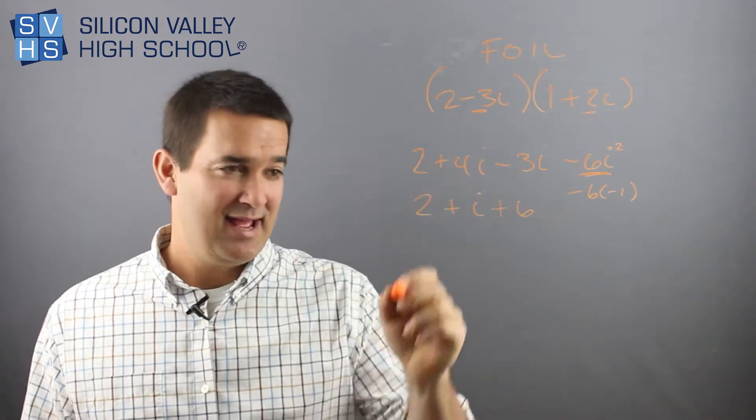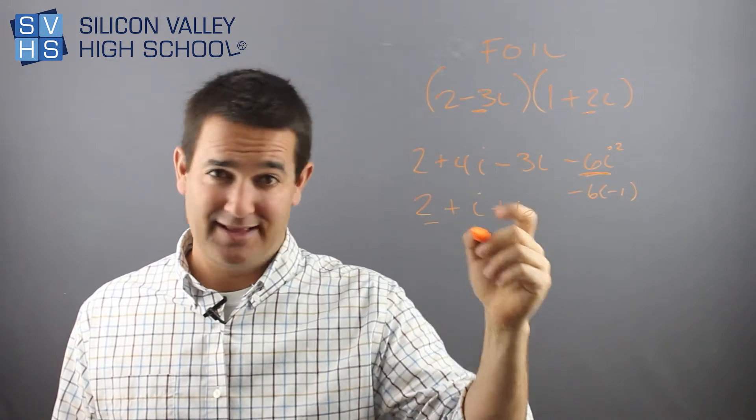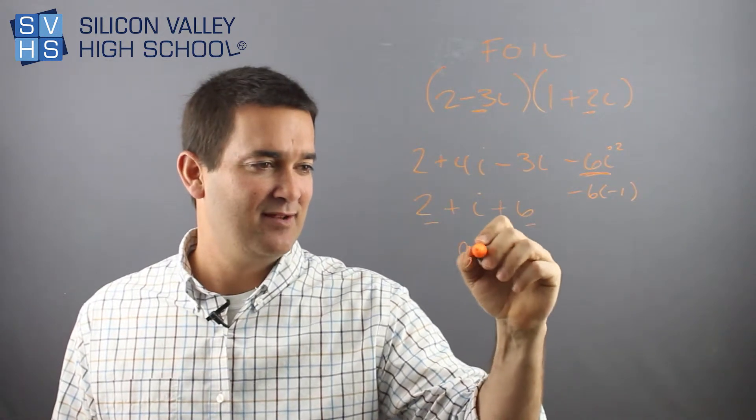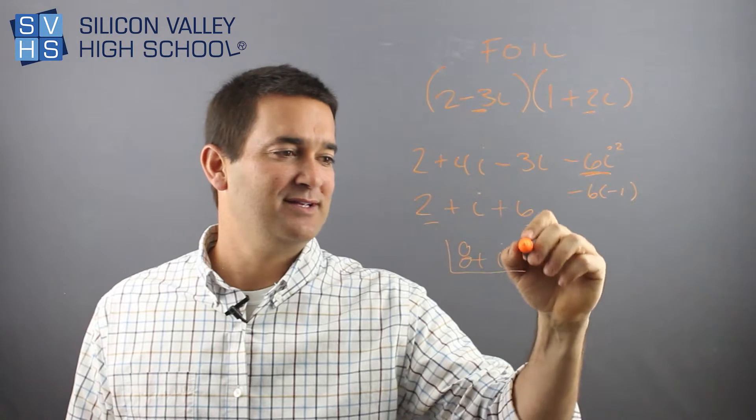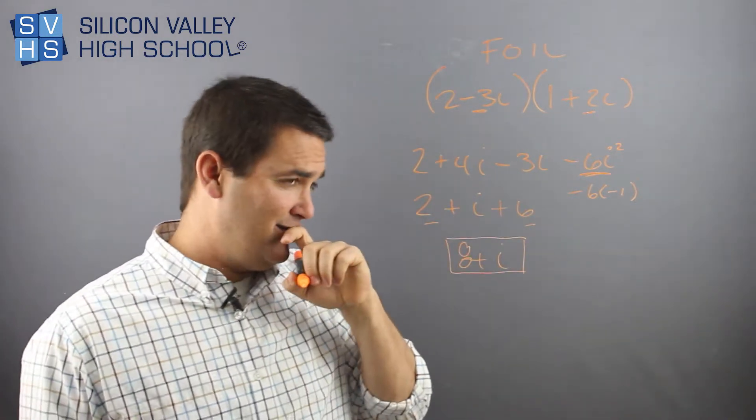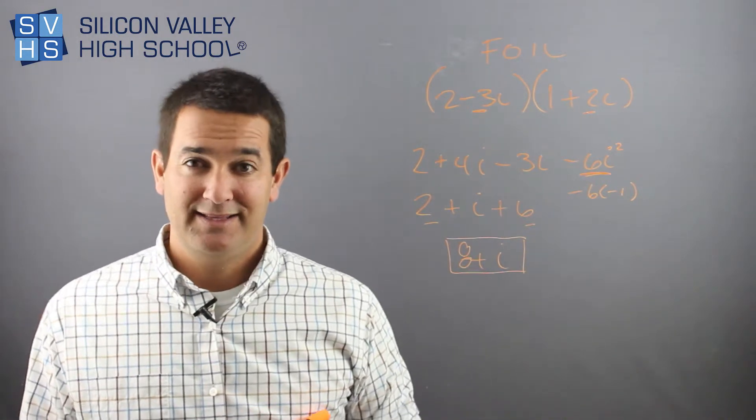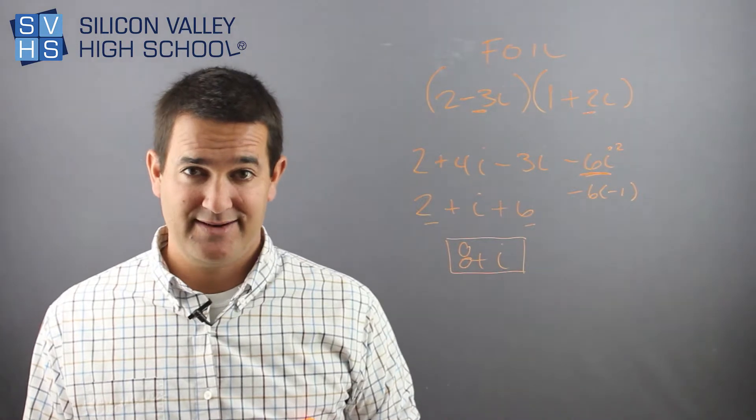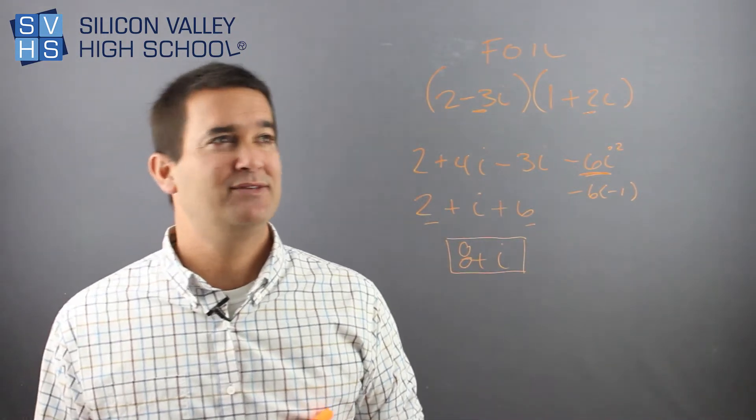So now, we have negative 6 times negative 1 is obviously plus 6. And then, adding like terms, you can add the 2 and the 6, and then you have 8 plus i. So as long as you remember that i squared is the same as negative 1, these operations with imaginary numbers aren't that difficult. And also, you do have to know how to FOIL.